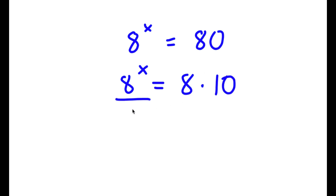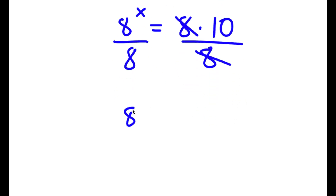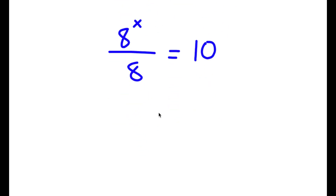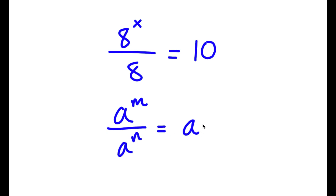Now I'm going to go ahead and divide both sides by 8, so these two cancel out and I get 8 to the power of x over 8 is equal to 10. If I have something in the form a to the power of m over a to the power of n, this is equal to a to the power of m minus n.